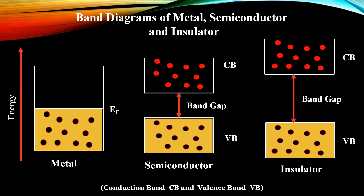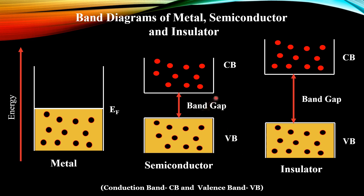As you might already know, there are three kinds of materials which can be classified according to their band diagrams. The first one is metal, which has electrons filled up to a particular level beyond which all levels are empty. Then comes semiconductor, where we have two carriers: negatively charged electrons which live in the conduction band, and positively charged holes which live in the valence band. The energy difference between the conduction band and valence band is designated as the band gap of a semiconductor.